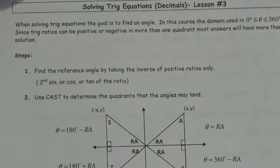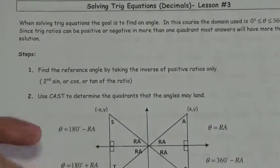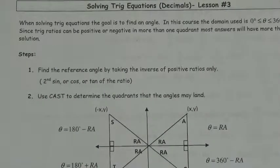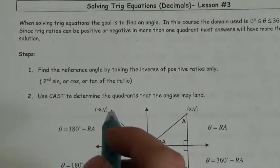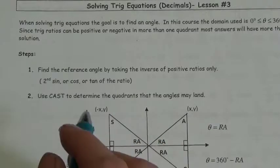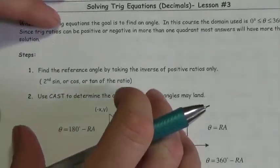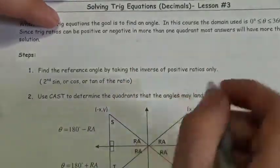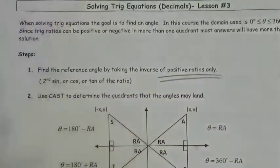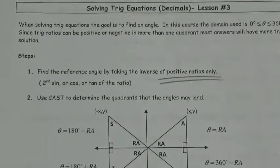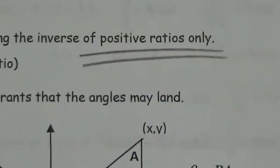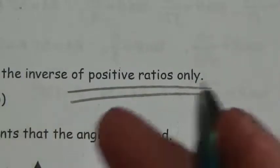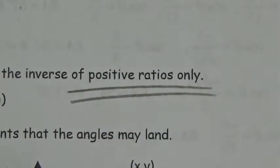When we approach this, I'm going to jump right into some examples so you can see how this happens. Hopefully by repetition you'll get a sense of what's going on. We always have to use the calculator and the inverse trig function to go backwards from the ratio to the angle. But you need to make sure you do that for positive ratios only.